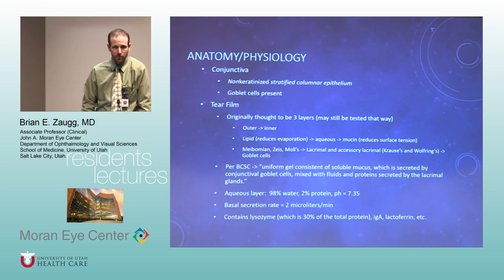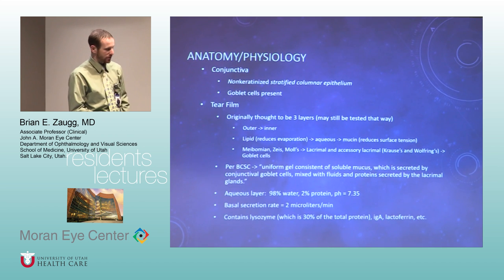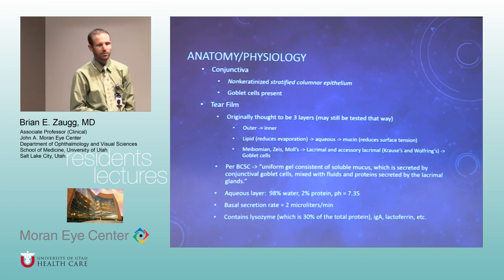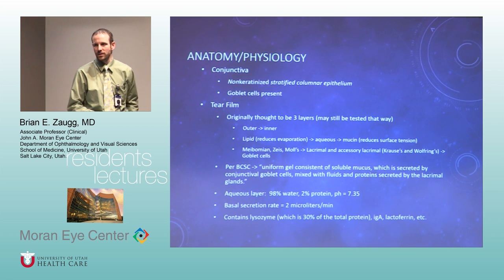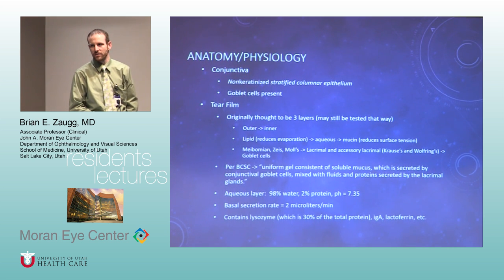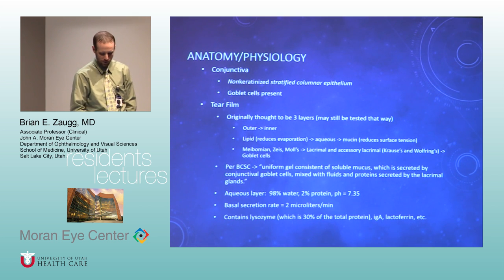On anatomy, they're probably still going to ask you about the three-component tear film. They've kind of changed their thinking on this — in the recent BCSC they say it's just a glob of all these things together. But historically, the tear film has been thought of as three distinct layers: lipid, aqueous, and mucin. They like to ask where each of them comes from — that's a common question.